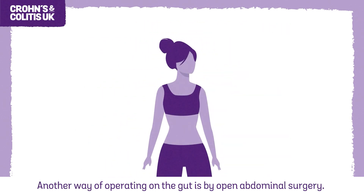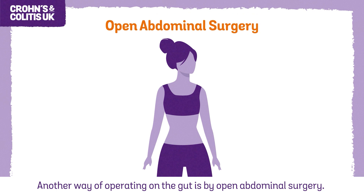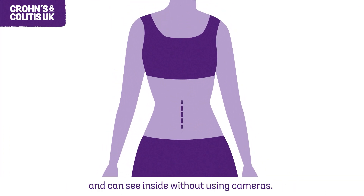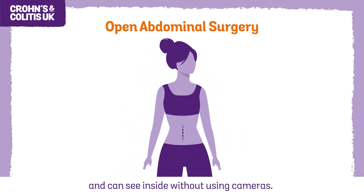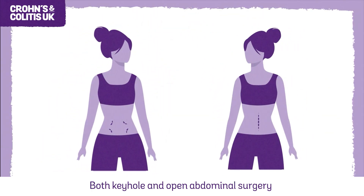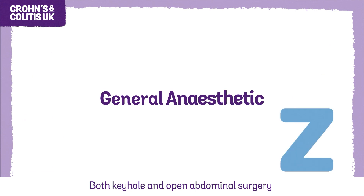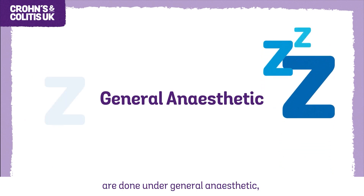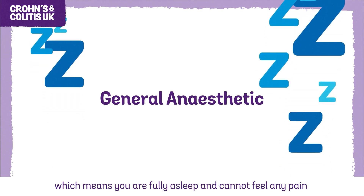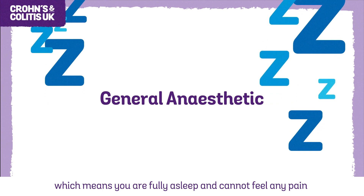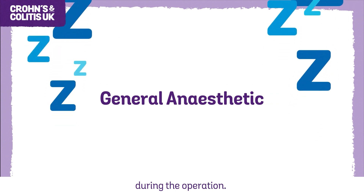Another way of operating on the gut is by open abdominal surgery, where the surgeon makes one larger cut in the tummy and can see inside without using cameras. Both keyhole and open abdominal surgery are done under general anaesthetic, which means you are fully asleep and cannot feel any pain during the operation.